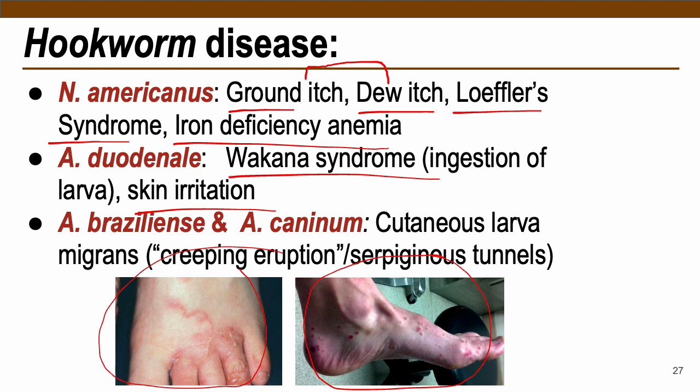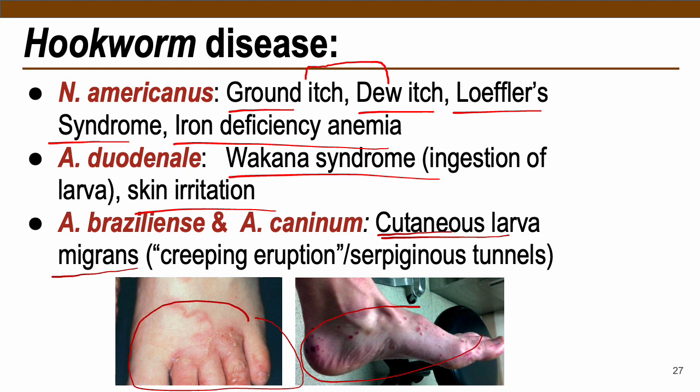Zoonotic hookworms (braziliense and caninum) cause cutaneous larva migrans, also known as creeping eruption — ectopic skin infection only. The worm may be observed moving under the superficial layer of the skin.